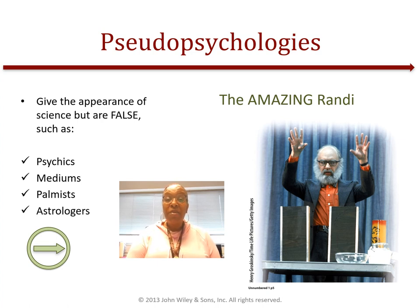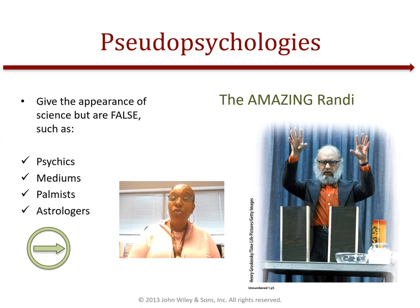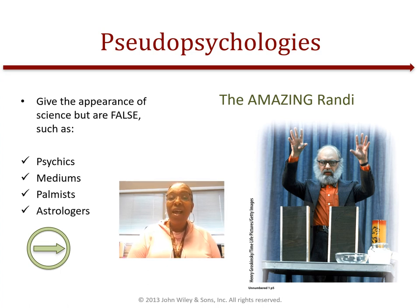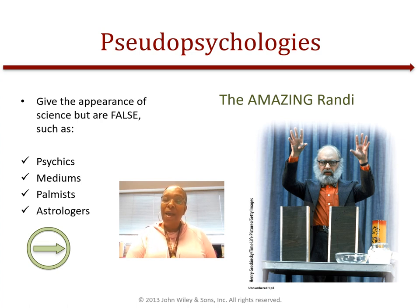In the picture you'll see the Amazing Randi — magician James Randi — and what he did was dedicate his life to educating the public about fraudulence related to pseudo-psychologists. Along with the prestigious MacArthur Foundation, Randy offered one million dollars — and I think he actually upped it to ten million dollars — to anyone who can prove a genuine psychic power under proper observing conditions.